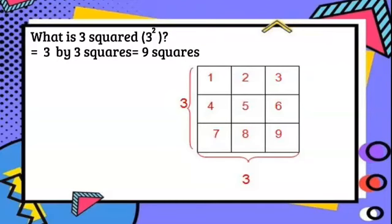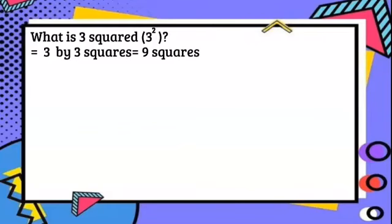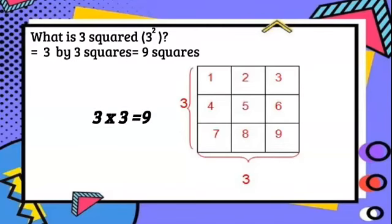And 3 rows of squares coming down. So rows and columns of squares. So 3 by 3 squared would be equal to 9. 3 times 3 is 9, or 3 squared is equal to 9.